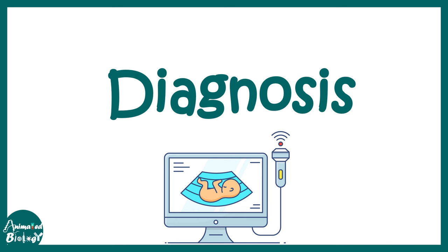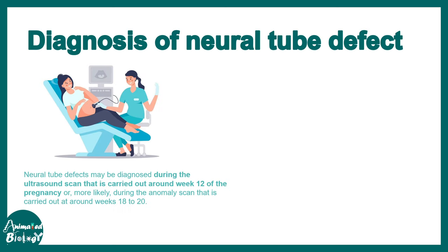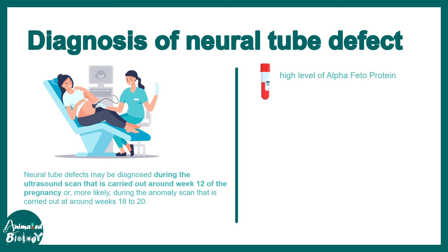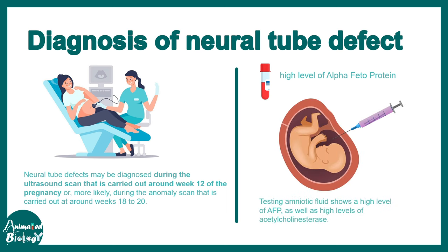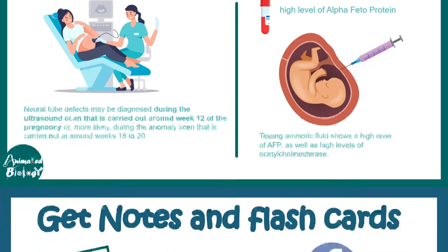Diagnosis of anencephaly or any other neural tube defects can be done using ultrasound around week 12 of pregnancy. Also, a high level of alpha-fetoprotein is another indicator that something is wrong in neural tube development.